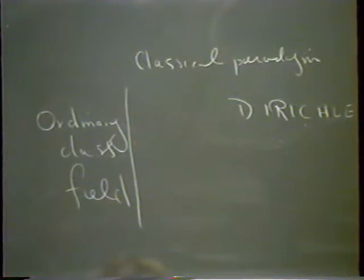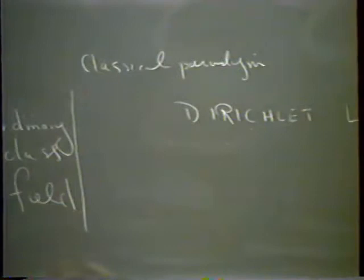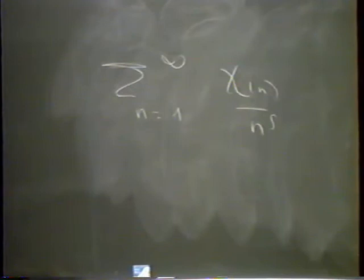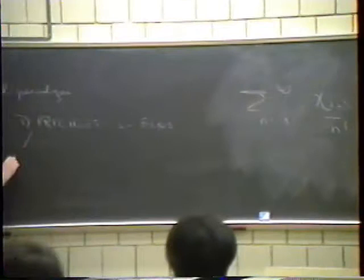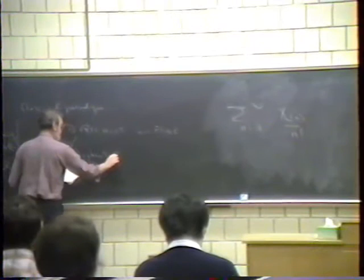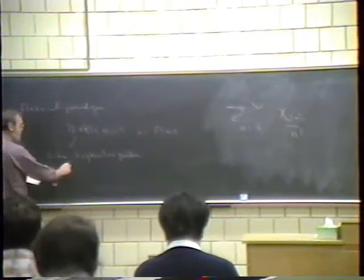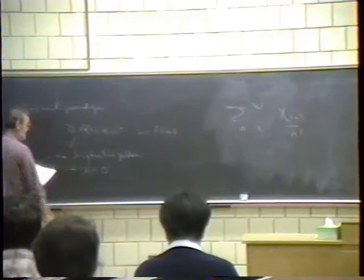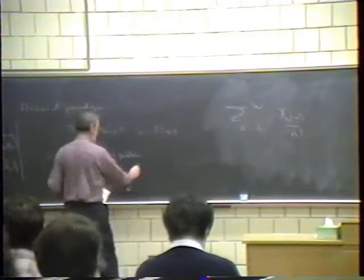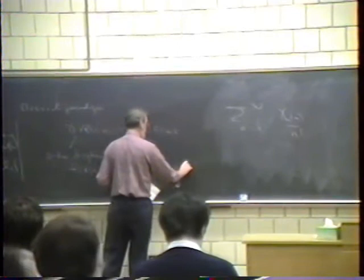These are functions basically of the form: summation from n equal 1 to infinity of chi(n) over n to the s, where chi is some periodic function of n. Because chi is periodic, these things can be handled by Fourier analysis. The Diophantine problems on the other side are zero-dimensional Diophantine problems.